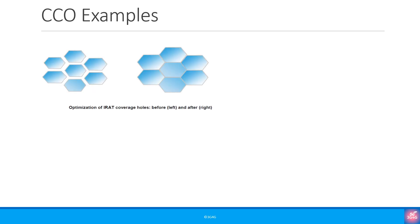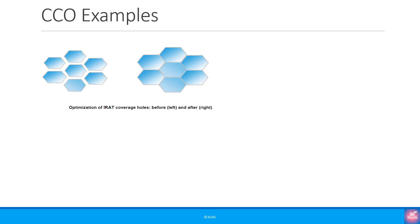The first example illustrates the case where there were coverage holes between the cells, and CCO helped get rid of those coverage gaps. In this example, we have properly planned cells but there is no coverage at the edge of an isolated island. CCO helps improve the situation by increasing the power in such a way as to avoid overlap gaps between the cells, extending coverage to reach the edge of the isolated island.